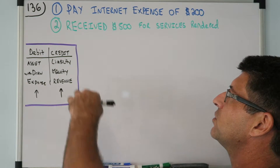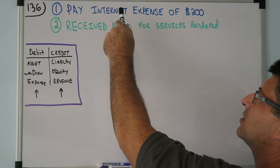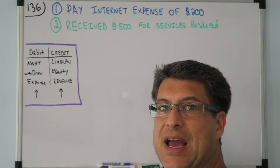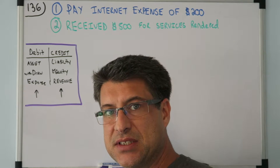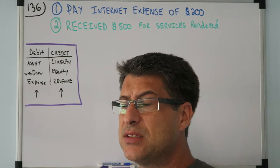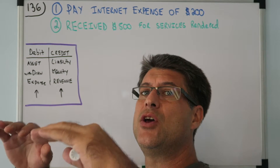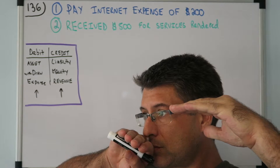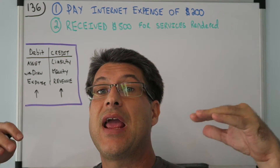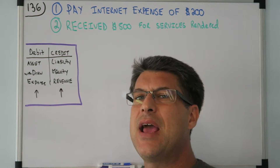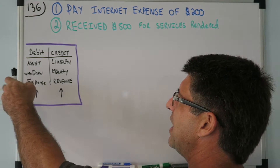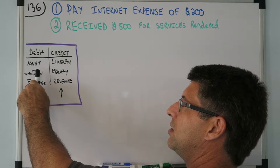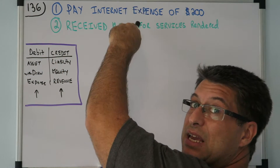We've got two journal entries to do. The first one: pay internet expense of $200. You're paying someone $200, so cash is leaving the business. Cash is an asset leaving — that means the account is going down. If you had $1,000 cash and $200 leaves, you only have $800 left. Because it's a decreasing balance, the asset cash is going to be a credit.